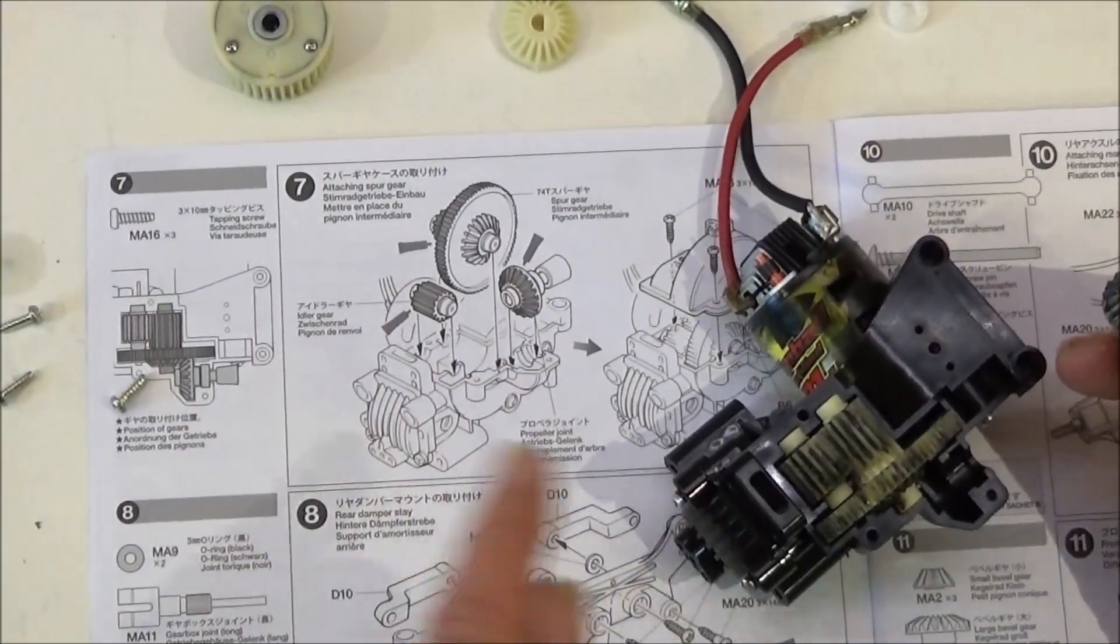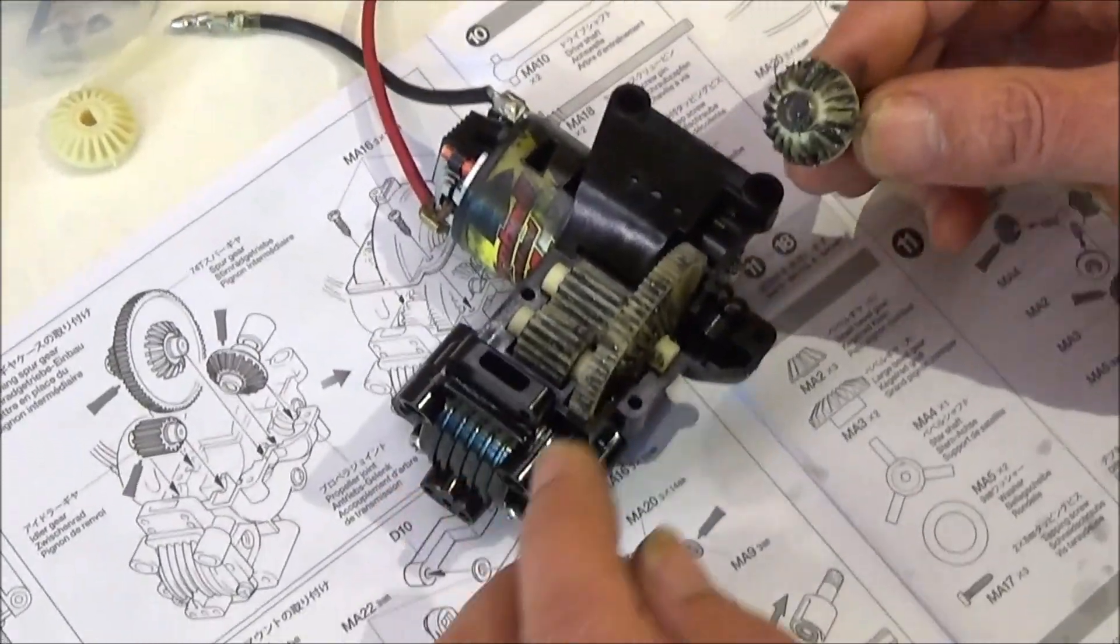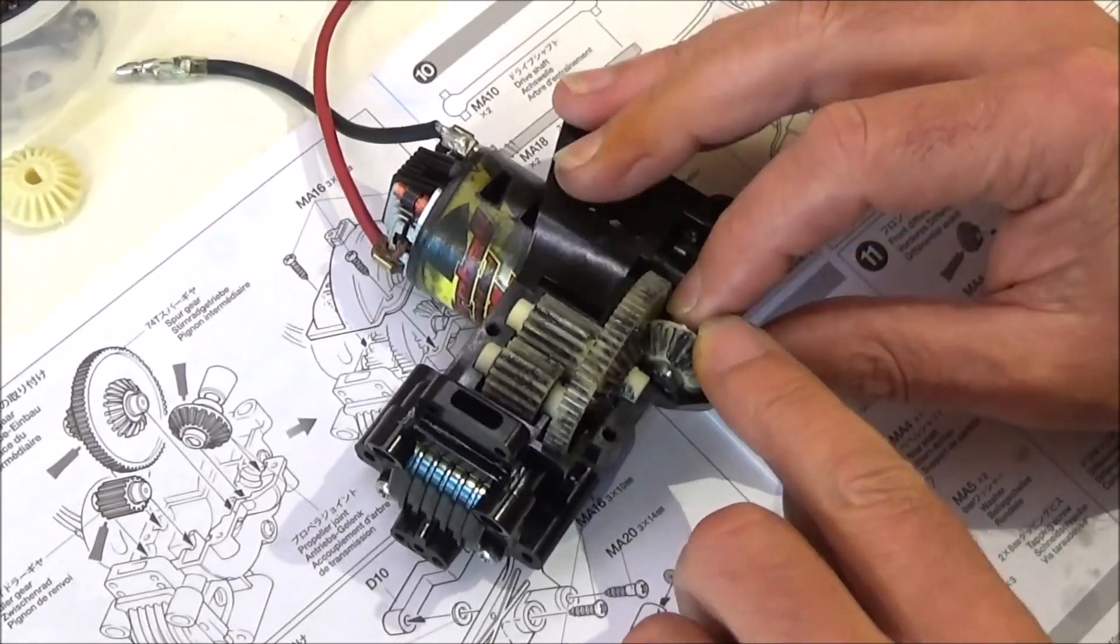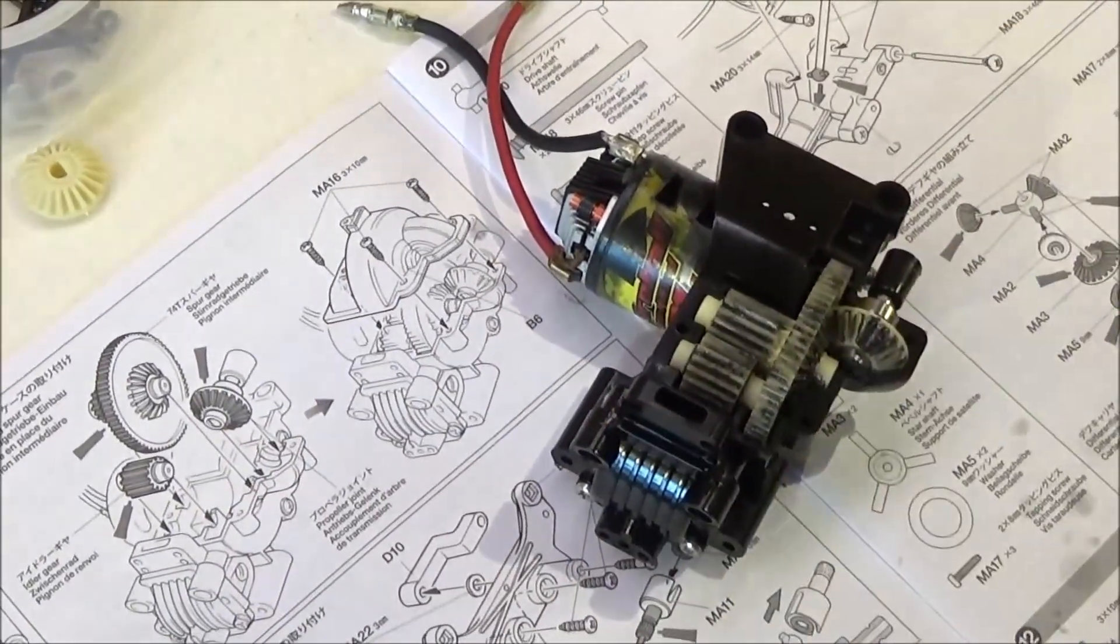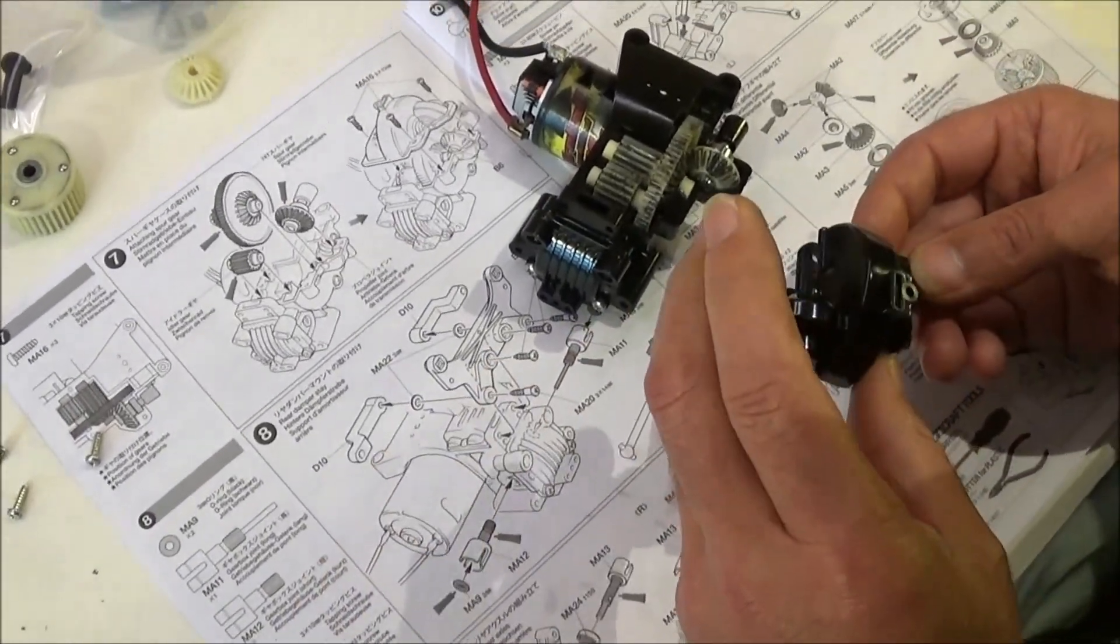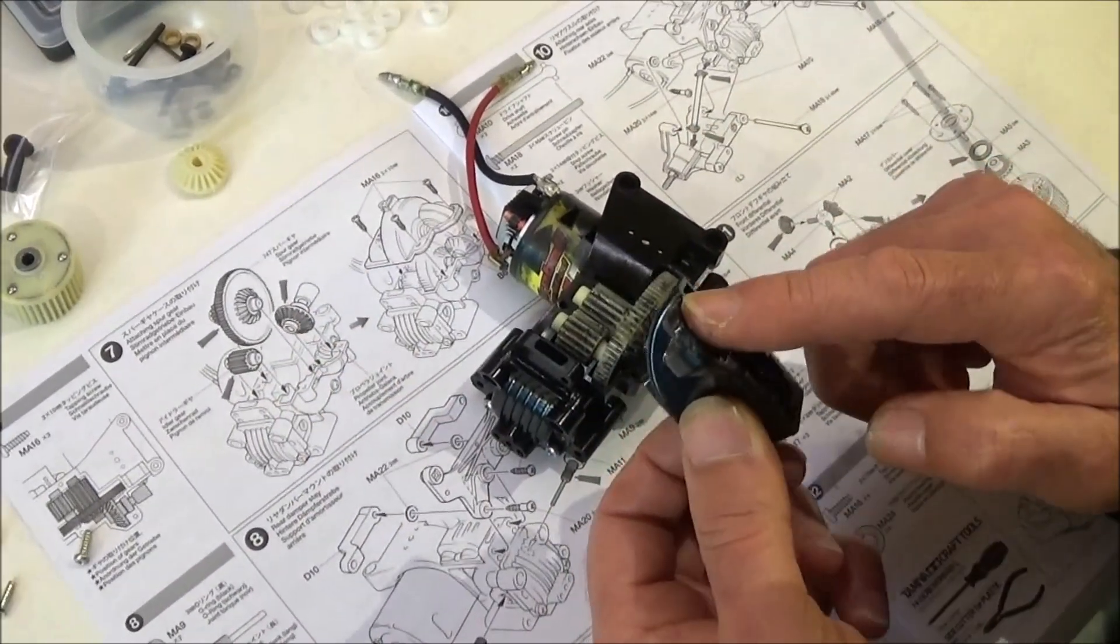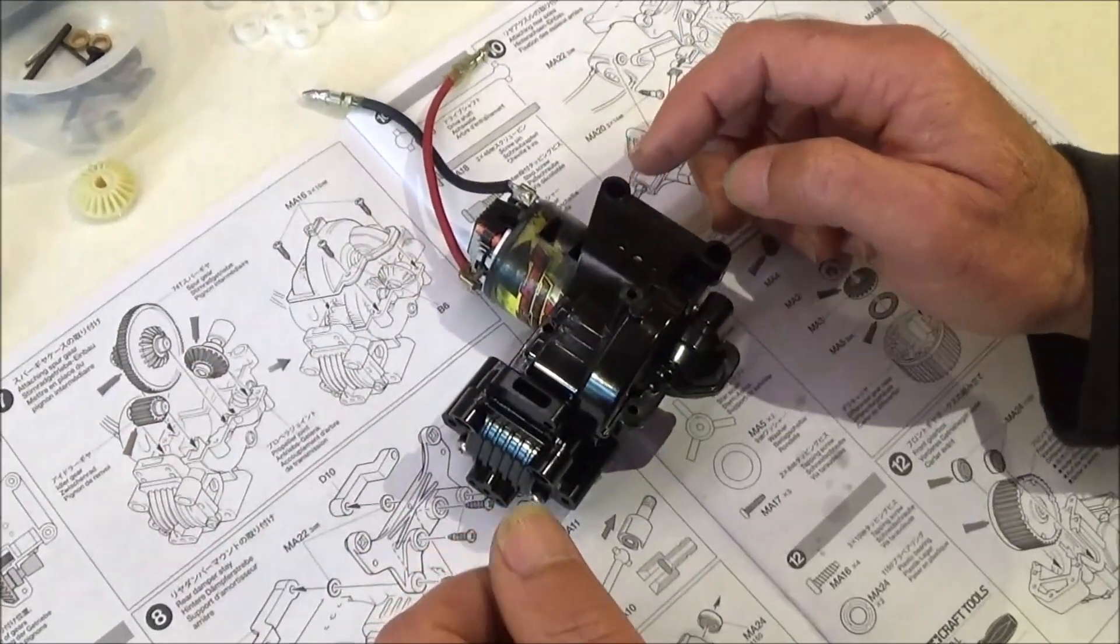Step seven is just dropping those gears we've just put onto the shafts into the case. So these two are just dropped in there. Fit the prop joint in there. And then we need to fit on the cover, which is B6. So again, the right way around. I'm just going to put some grease around there just to seal it. And then that attaches with these three terminal screws.